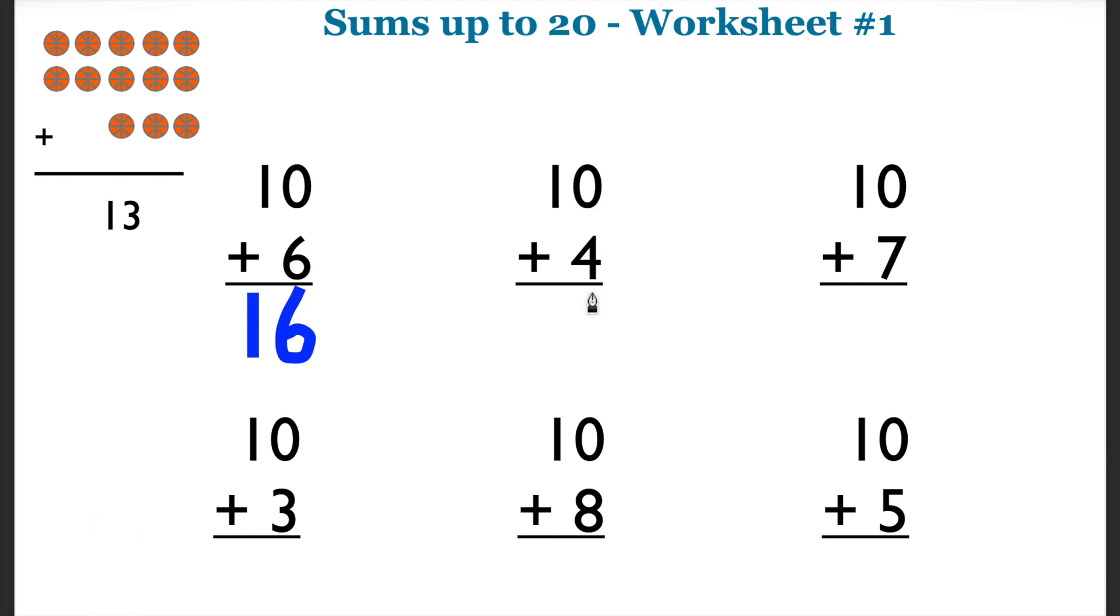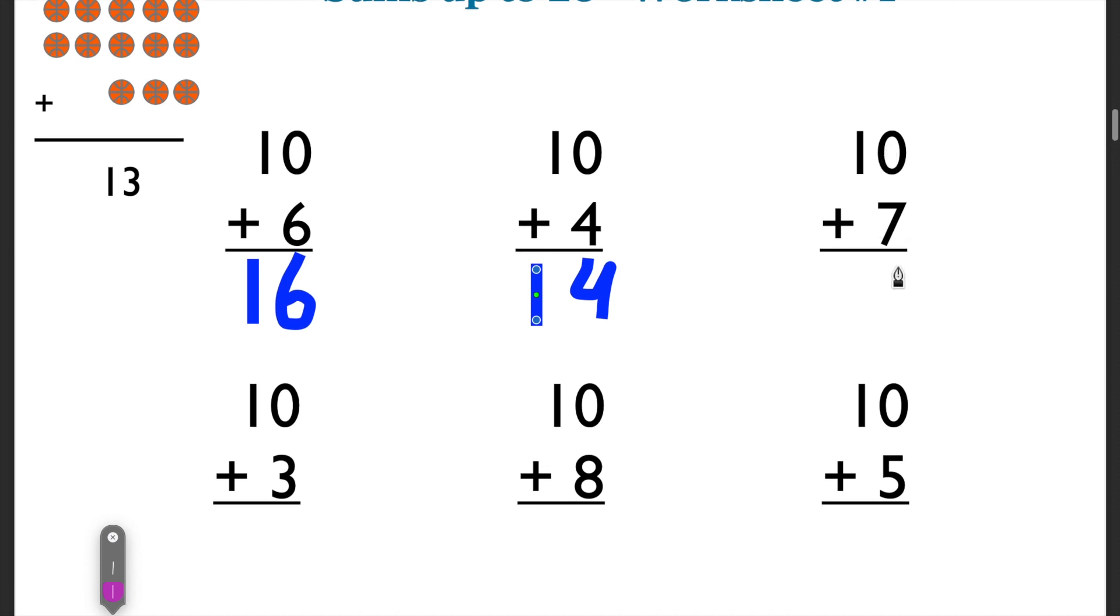So let's say I have 10 plus 4. I know that that's going to be 14. I can easily see that's 14 right there. Let's say I have 10 plus 7. 7 plus 0, that's going to be 7. That's going to be 17. I can easily see that that's 17.